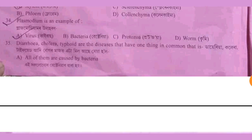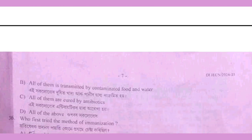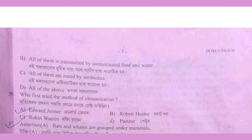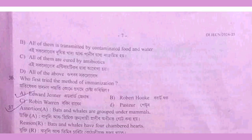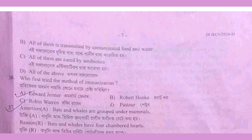Question 35: diarrhea, cholera, and typhoid are diseases caused by bacteria. These bacterial diseases are treated with antibiotic drugs.